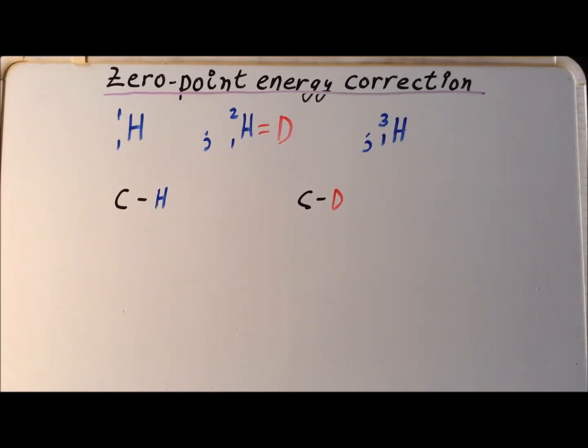One of the most important bonds in organic chemistry and biochemistry is the single bond between carbon and hydrogen. And we can understand the bond better by comparing the bond between carbon and ordinary hydrogen, so from now on I'm going to refer to ordinary hydrogen, hydrogen-1, as H in a blue color, and compare it to the bond between carbon and deuterium, where I show hydrogen-2 in red.